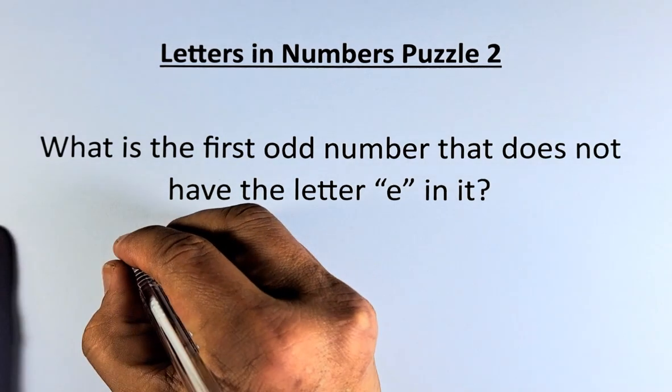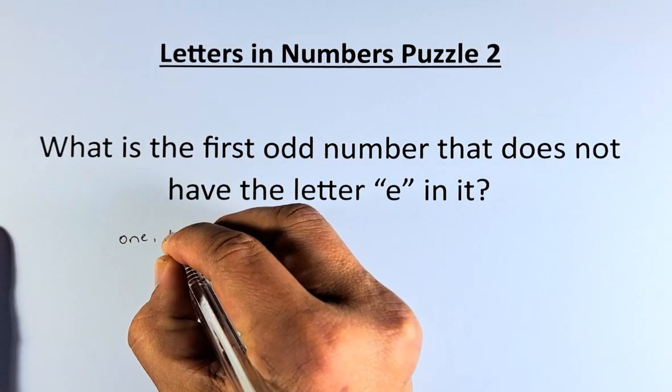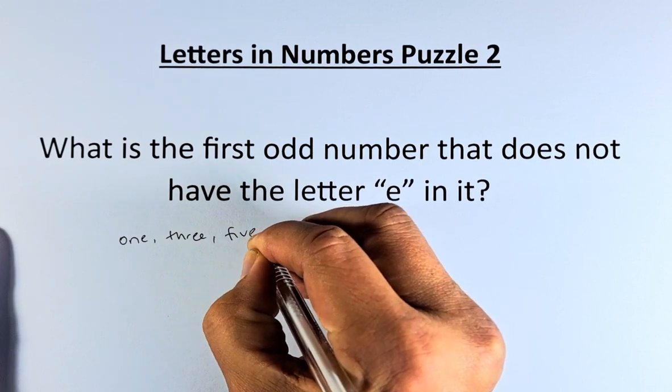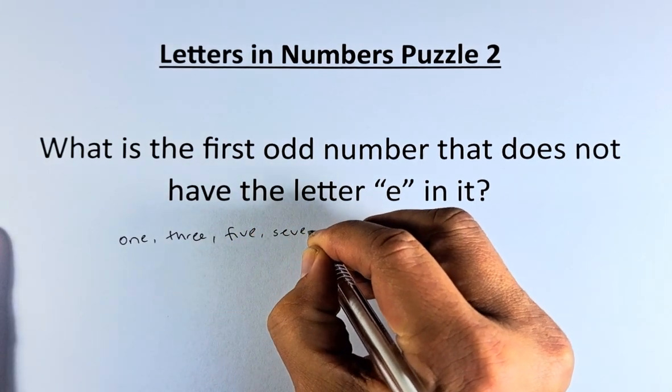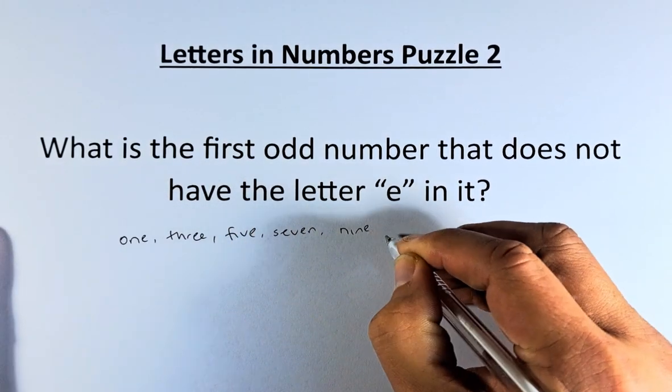So the odd numbers are 1, 3, 5, 7, 9, and so on.